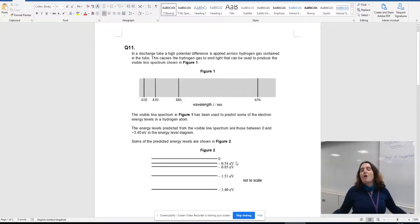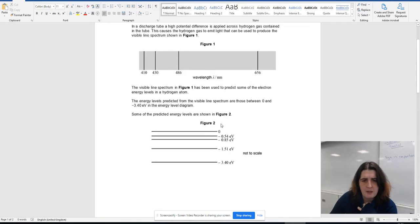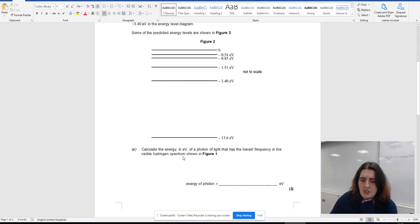Hello and welcome to day 11 of the 24-day physics extravaganza of questions. Today we have a bit of energy levels and wave-particle duality. I've got a discharge tube here with a very high potential difference applied across hydrogen gas contained in the tube. This causes the hydrogen to emit light that can be used to produce a visible line spectra. The visible line spectra at figure 1 has been used to produce some of the electron energy levels in hydrogen atoms. The energy levels predicted are between 0 and minus 0.34, and they've predicted those energy levels there.